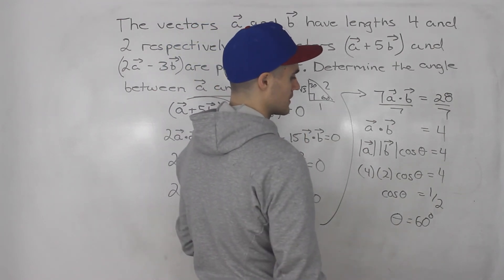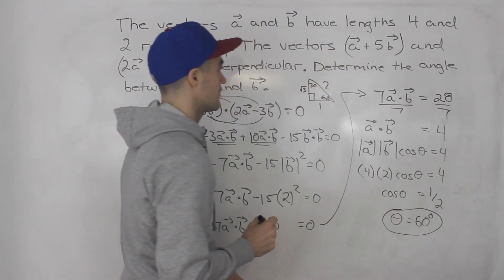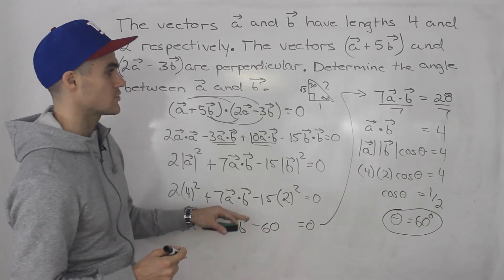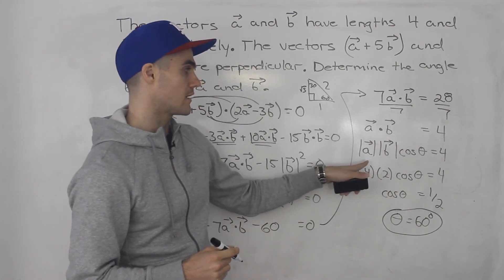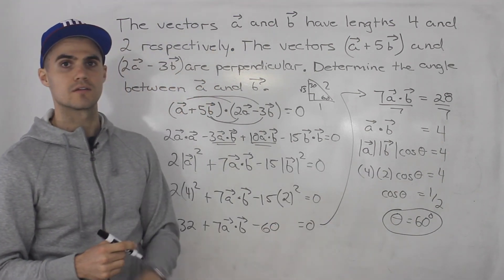Cos of 60 is 1 over 2. So we know θ is 60. So that there is your final answer. That is the angle between vectors a and b. You got to do some algebra. You got to find out what the dot product between a and b is. And then with the dot product formula you could solve for that θ. You end up with 60 degrees.